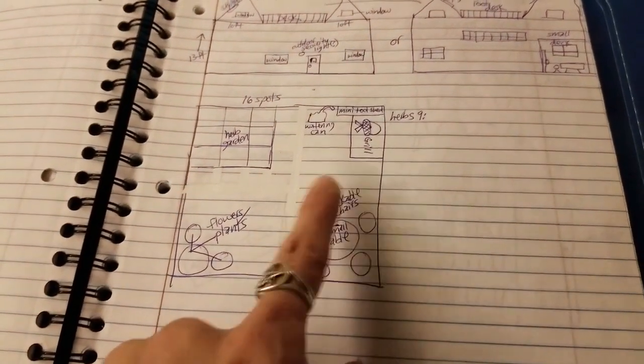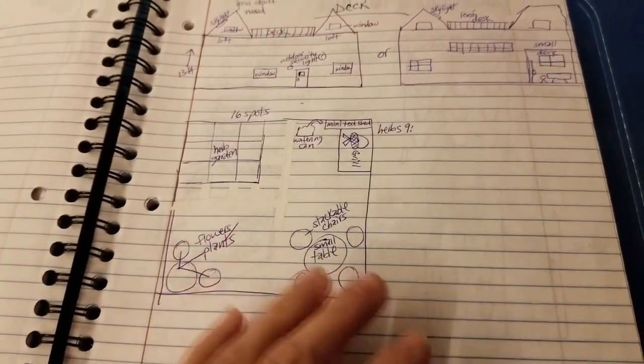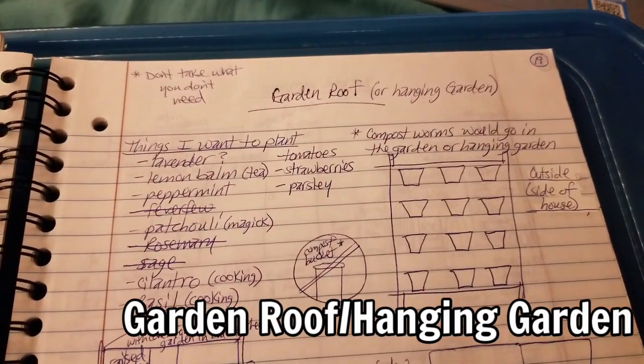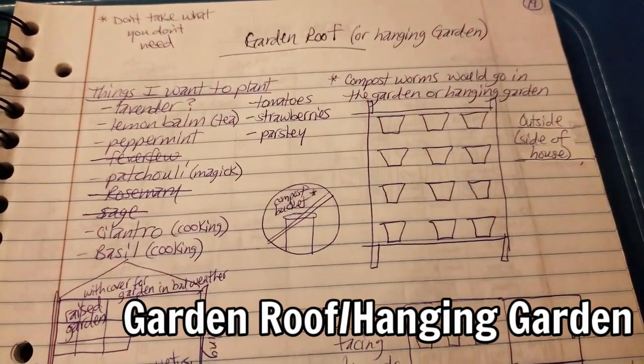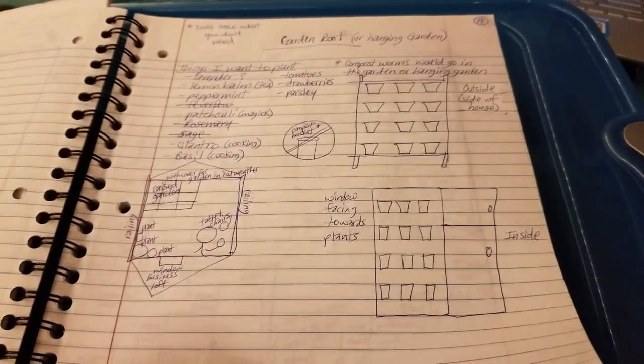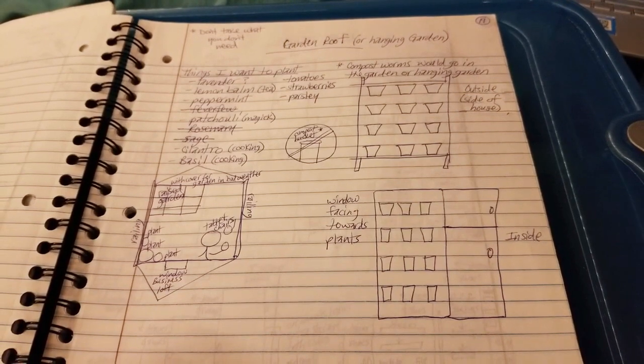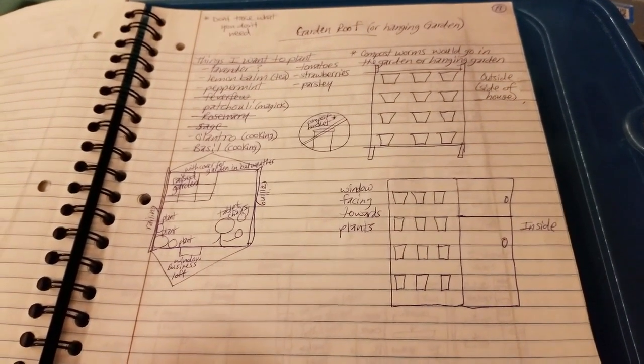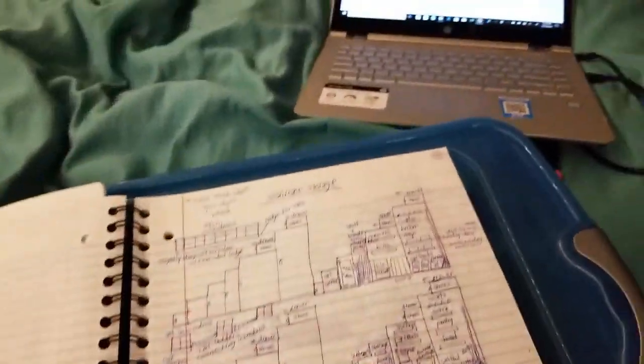I even had where all my plants would go, where the tables would go. Garden roof or hanging garden - it's all planned out. None of this happened. When I move to my new spot, hopefully something will happen outside, but I planned for it just in case.